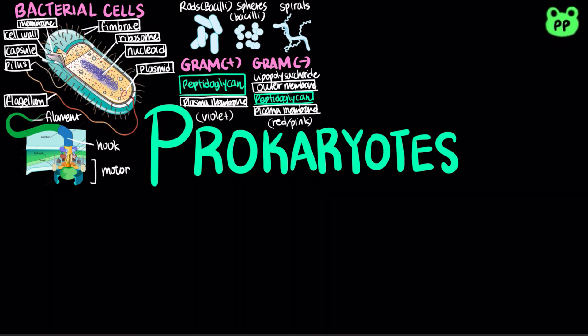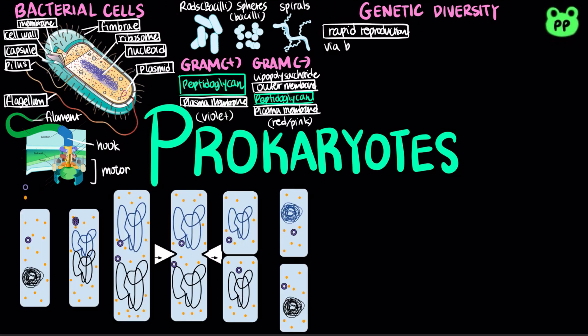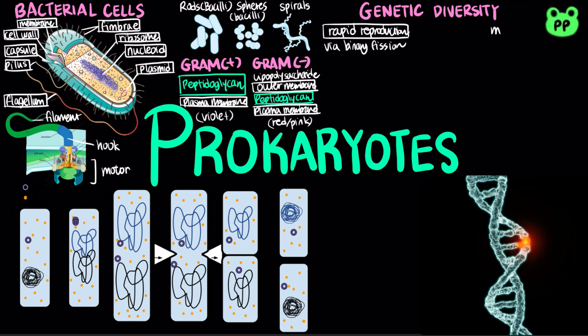Prokaryotes have considerable genetic variation. Three factors contribute to this genetic diversity. First, prokaryotes reproduce rapidly by binary fission. As a consequence of rapid reproduction, mutations can accumulate rapidly in a population.